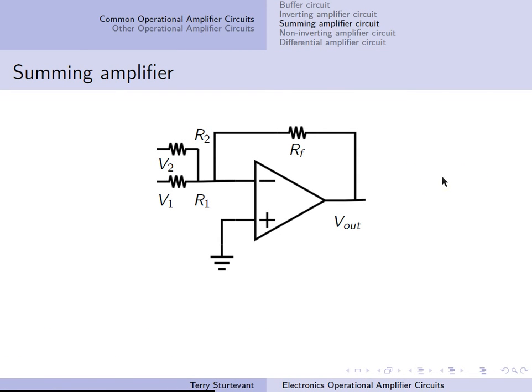The summing amplifier looks like this, which, as it suggests, sums the voltages on these two inputs. The output is minus RF times V1 over R1 plus V2 over R2. The minus sign means the output is inverted from either of the inputs, and the proportion of the inputs that are added depends on these two resistors. This can be extended to as many inputs as you'd like.